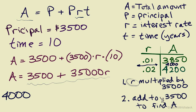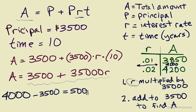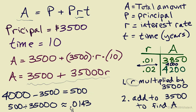To undo adding $3,500, we do the opposite and subtract: $4,000 minus $3,500 leaves us with $500. Then we undo multiplying by 35,000 by dividing: 500 divided by 35,000 gives approximately 0.0143, or about 1.43% — a value right between 1% and 2%, giving a total amount of $4,000 right between those two table values.